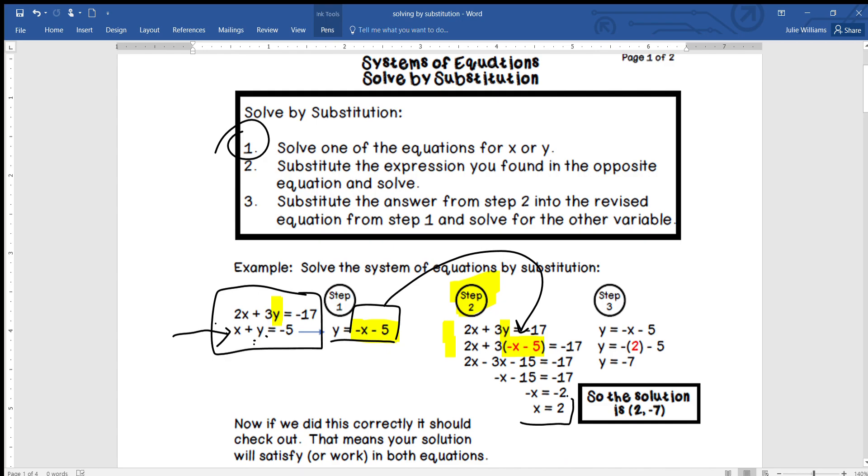And so then we just use the distributive property and solve like we would any multi-step equation. We solve for x in this case, so we get x is equal to 2. So again with systems of equations, we know we always put it in coordinate pair form, so the x is equal to 2. Then remember what variable you have solved for.